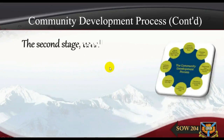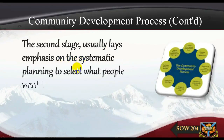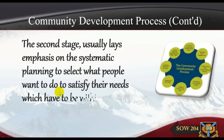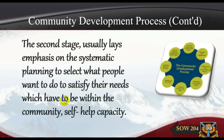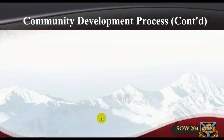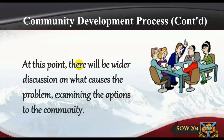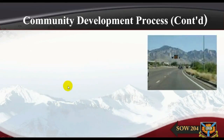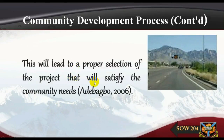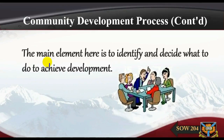The second stage places emphasis on systematic planning to select what people want to do to satisfy their needs, which must be within the community's self-help capacity. At this point there will be wider discussions on what causes the problem, examining the options available to the community. This will lead to a proper selection of the project that will satisfy community needs (Adi Bagbo, 2006). The main element here is to identify and decide what to do to achieve development.